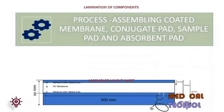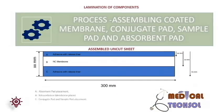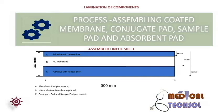Lamination is the process of assembling the coated membrane, conjugate pad, sample pad, and absorbent pad. Typical assembly cards are shown in the figure with the absorbent pad area, NC membrane area, and conjugate pad area. In the continuous reel process, components are assembled and cut into small strips.